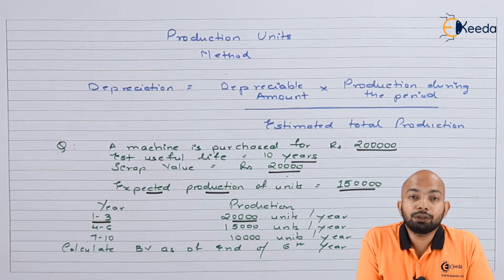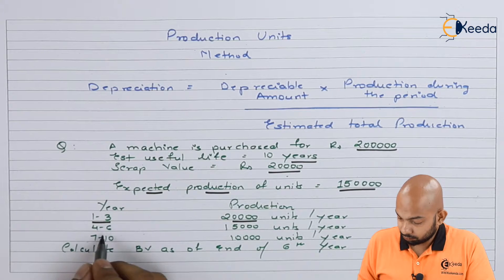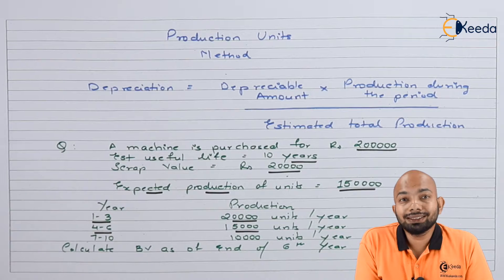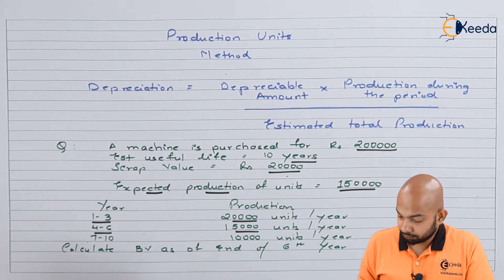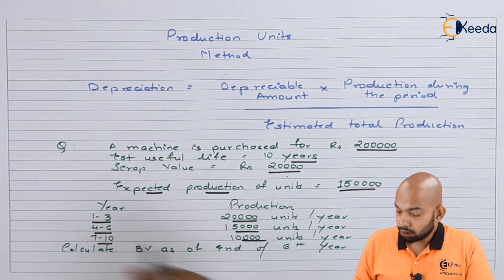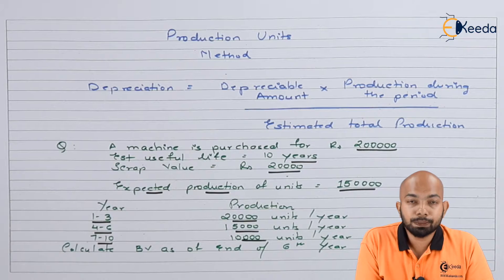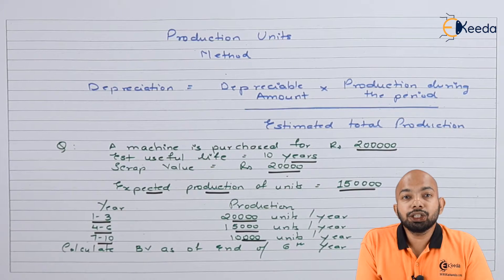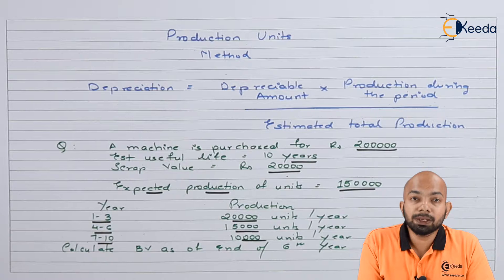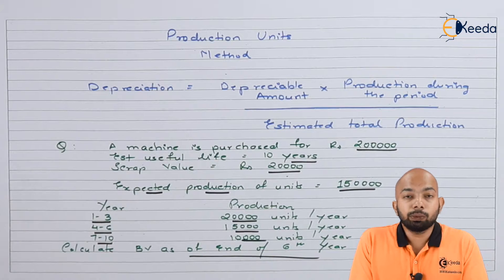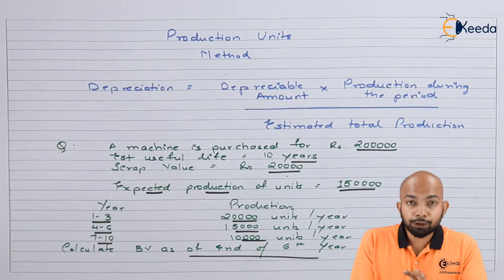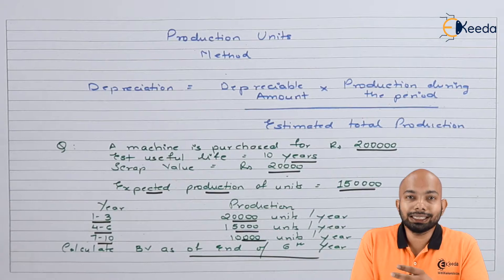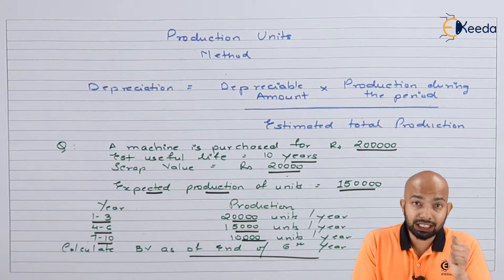For the first 3 years we have 20,000 units per year. For years 4 to 6 we have 15,000 units per year. For years 7 to 10 we have 10,000 units per year. According to this, we can calculate depreciation. The additional detail required is the book value of the machine at the end of the 6th year. We will start with the timeline and then the working note.